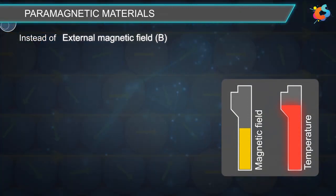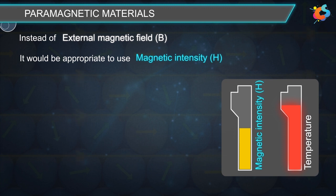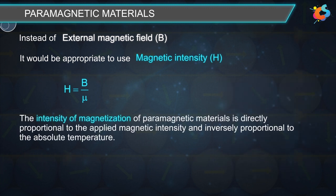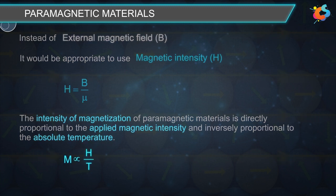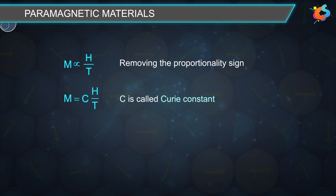Instead of external magnetic field B, it is more appropriate to use the term magnetic intensity H, which is the actual source of magnetic field. It is given by H = B/µ. The intensity of magnetization of paramagnetic materials is directly proportional to the applied magnetic intensity and inversely proportional to the absolute temperature: M ∝ H/T. Removing the proportionality sign, M = C × H/T, where the constant of proportionality C is called the Curie constant.